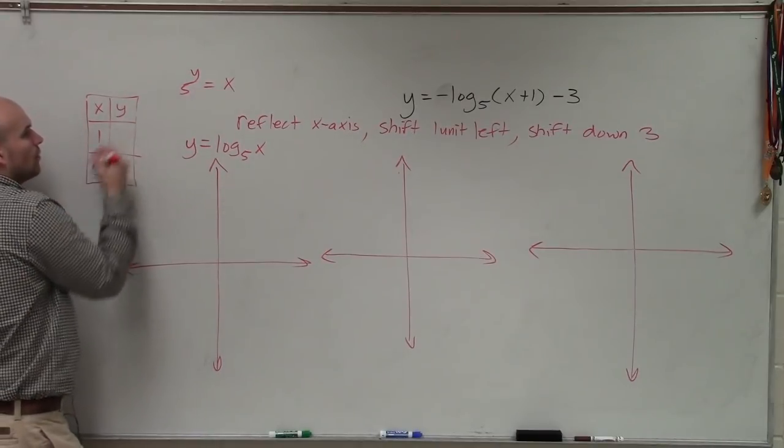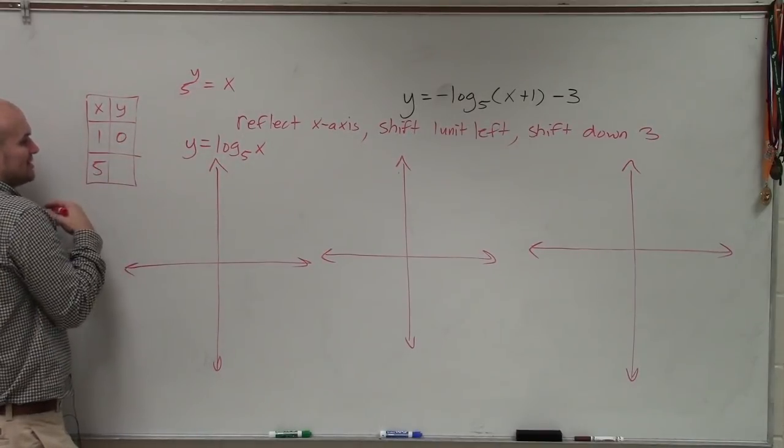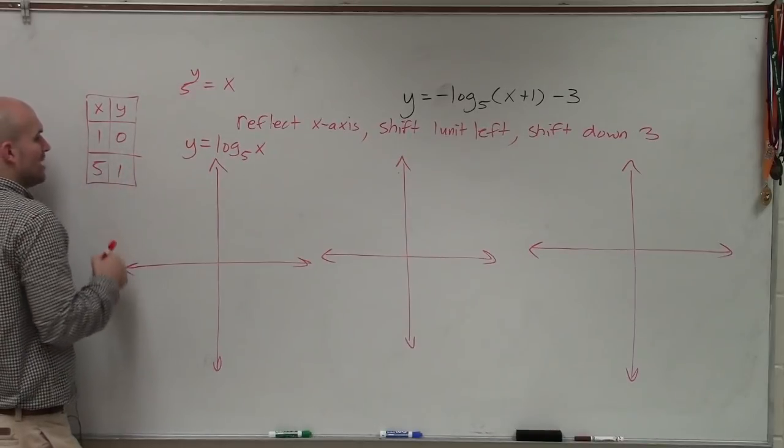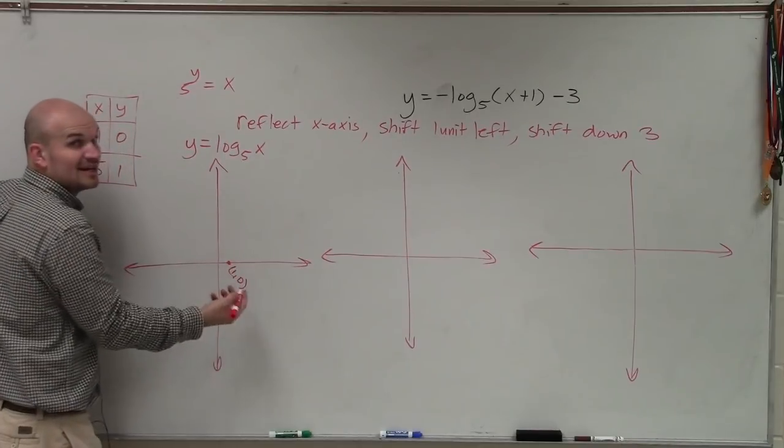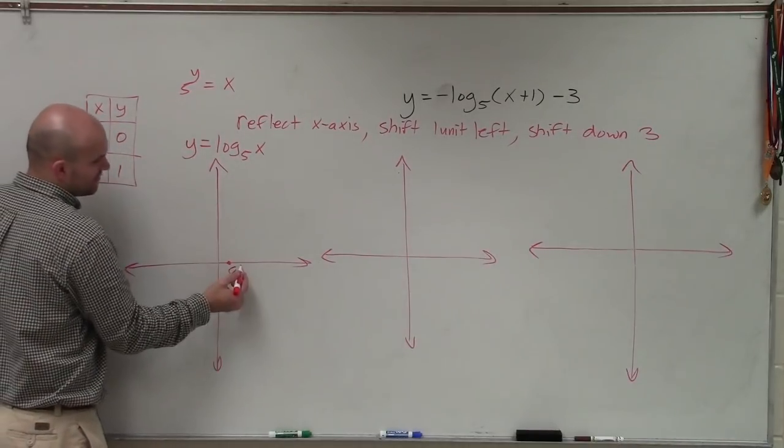So here if I have 1, y has to therefore be 0. And if x equals 5, then we know y equals 1. So therefore, I have the point 1 comma 0, which from the parent graph we should recognize as the x-intercept. And then we have the point 5, 1.